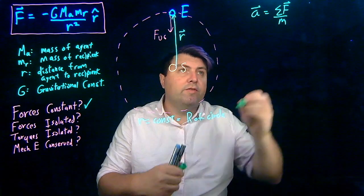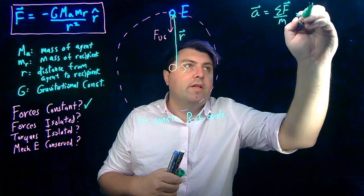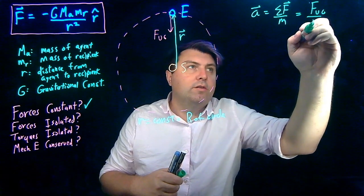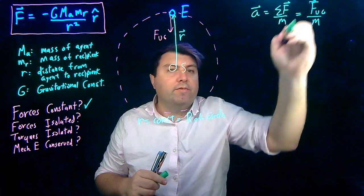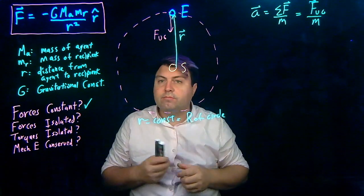So we can even say this is the force of universal gravitation over the mass, and that's all that we have to worry about. You can get a little vector sign.